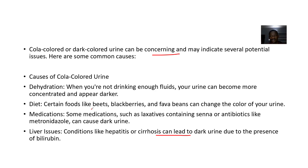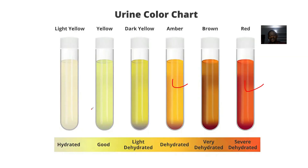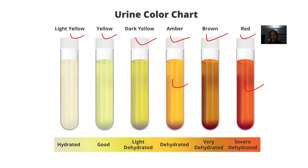So I think this is just it — at least you guys have gotten to see. So this is a urine color chart. On the urine color chart, you have light yellow, yellow, dark yellow, amber color, brown, and red. That's the urine color chart.